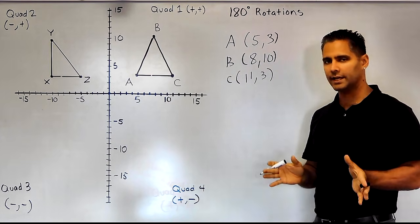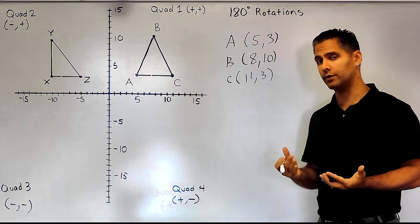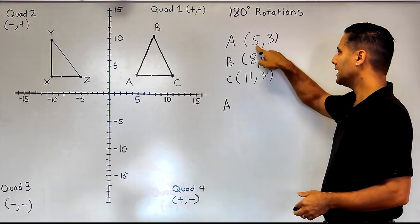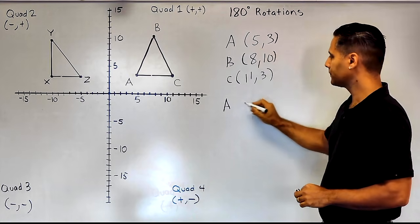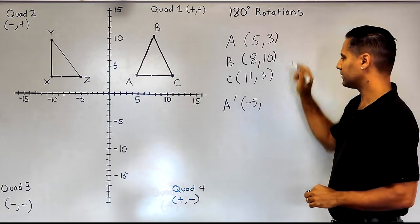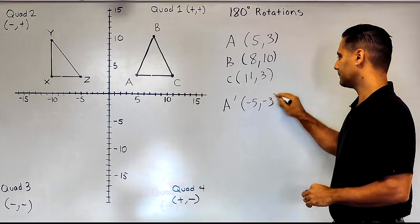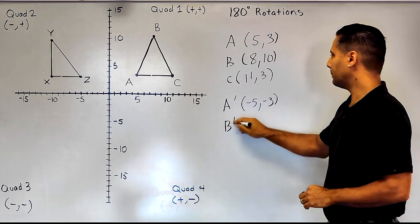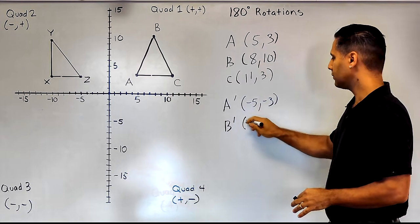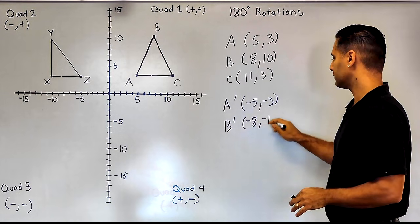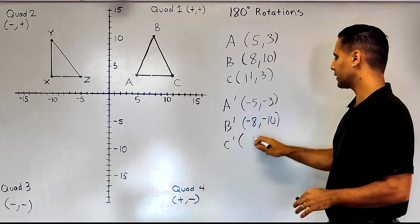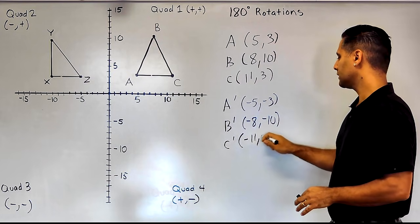Whenever rotating any object 180 degrees around the origin, all we have to simply do is take each value inside our parentheses and write its opposite integer. So instead of positive 5, we write negative 5; instead of positive 3, we write negative 3. For point B, instead of positive 8, positive 10, we change each one to negatives. And for point C, instead of 11, 3, we write negative 11, negative 3.